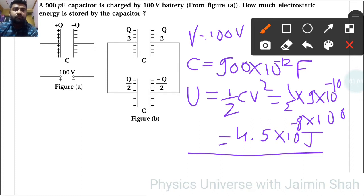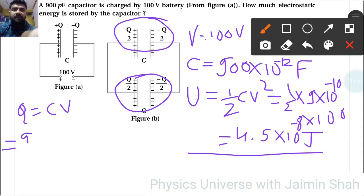Now to find the second energy, the charge becomes half of the previous one. Q equals CV. The charge is 900, so 9 into 10 raise to minus 8 coulombs.